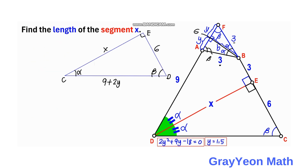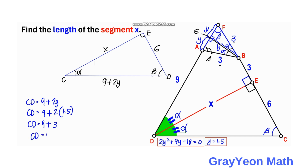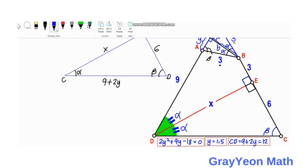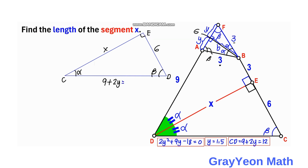Now that we have Y equals 1.5, we find CD: CD equals 9 plus 2 times 1.5 equals 9 plus 3 equals 12 units. We have now isolated right triangle ECD with hypotenuse CD equals 12 and one leg CE equals 6. The only unknown remaining is X, the length of DE.